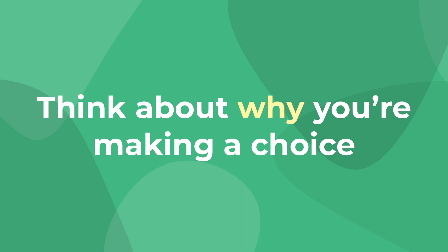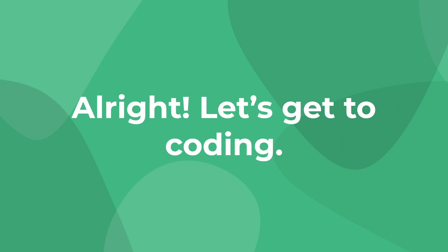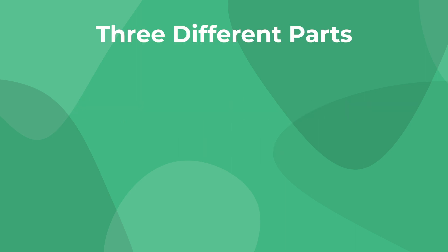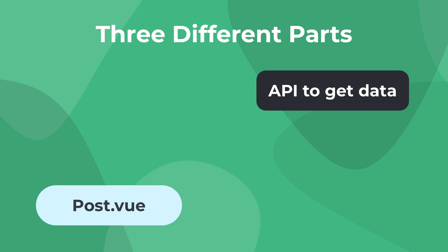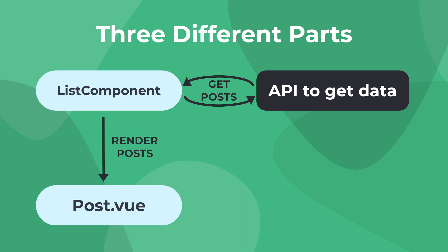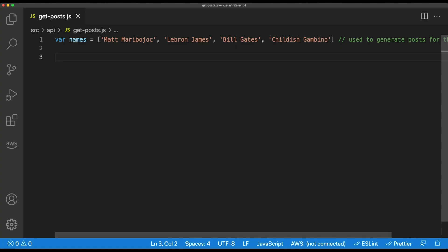Now that we know a little bit more about infinite scrolling, let's go ahead and build our app. From a high level, there are three different parts. One, a mock API that generates posts — for us, we're just going to create random posts. Two, a post component that renders each individual post. And three, a list component that contains all of our post components and handles loading in new posts from our mock API call. Let's tackle these in order.